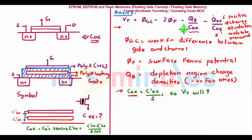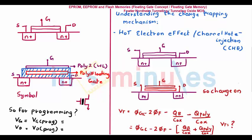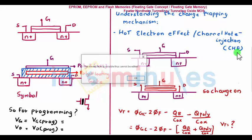If I put COX/2 back into the threshold voltage equation — since this is a positive term — when COX reduces, the threshold voltage would increase. However, this increase in threshold voltage is very small and is not of much use to us, because we want to make the threshold voltage greater than VDD — a very high value — in order to program EEPROM. For that, we will go back to how we can store charge on the poly gate, or we will understand a concept called the Hot Electron Effect, also known as Channel Hot Electron Injection, or CHE.